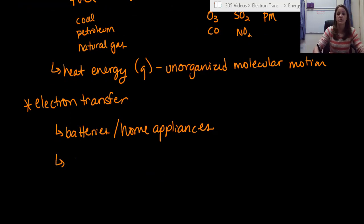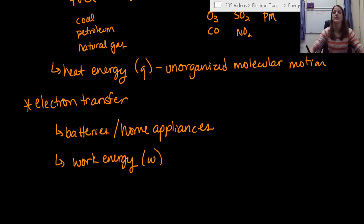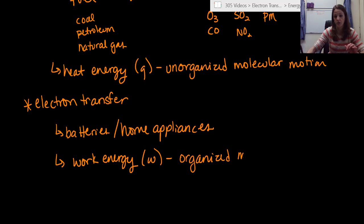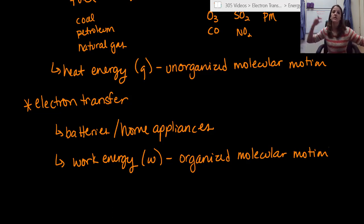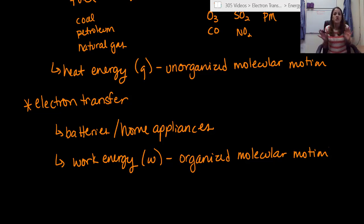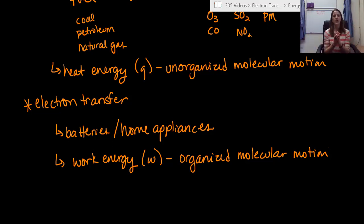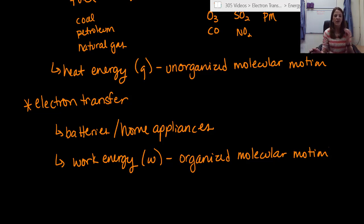Instead of using heat energy, electron transfer uses what's called work energy. Work energy is represented with a lowercase w, and it is not unorganized molecular motion — it is considered to be organized molecular motion. Work energy would be if all of those little kids came together and as a unit pushed over an ice cream truck — they worked together. There has to be a starting point and an end point in order for there to be work. If you don't have a distance component — a starting and an ending point — you cannot have work done. That's very crucial to the bare fundamental understanding of what work energy is.